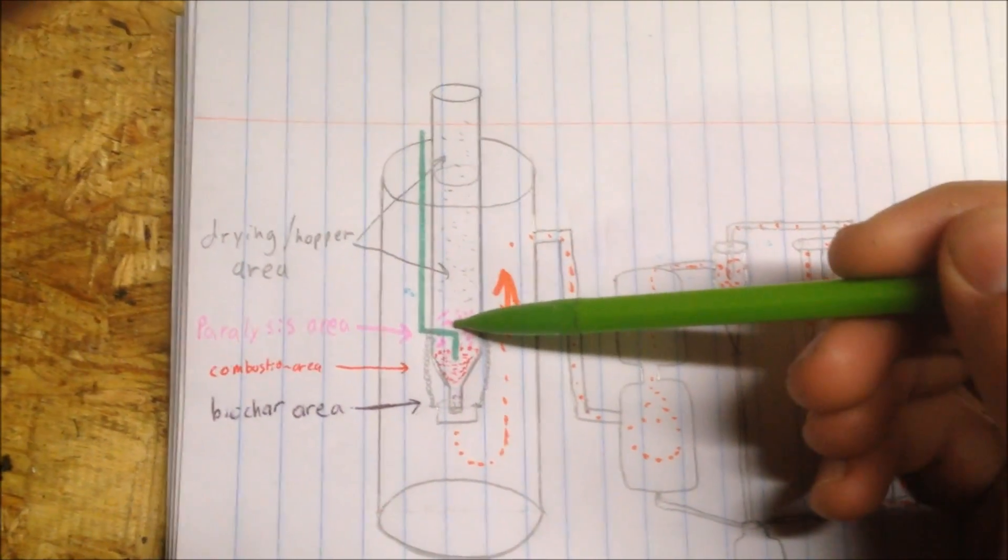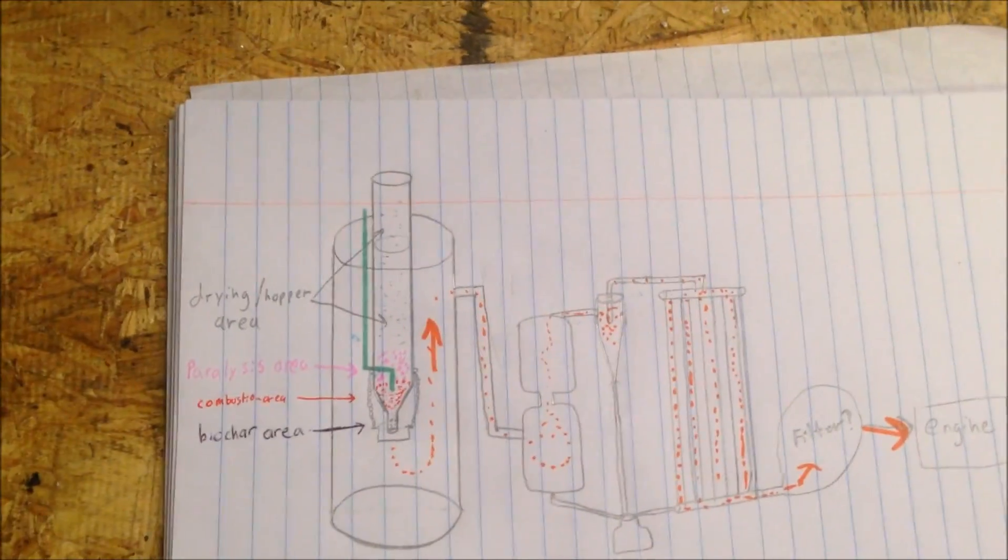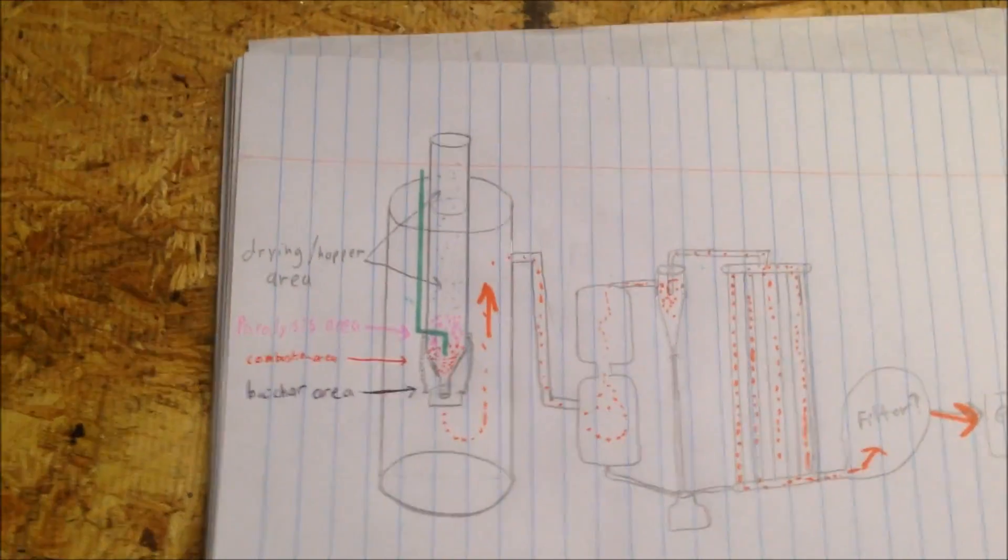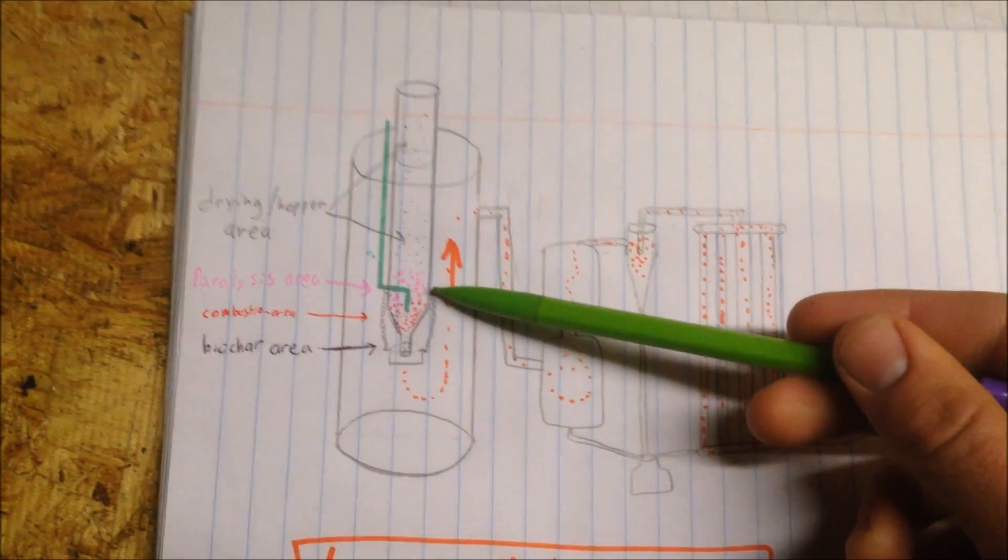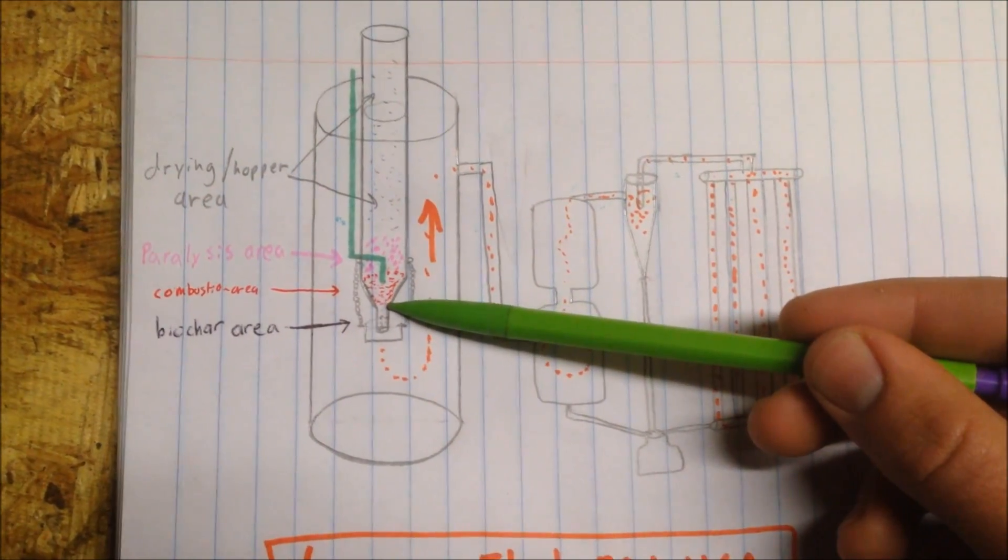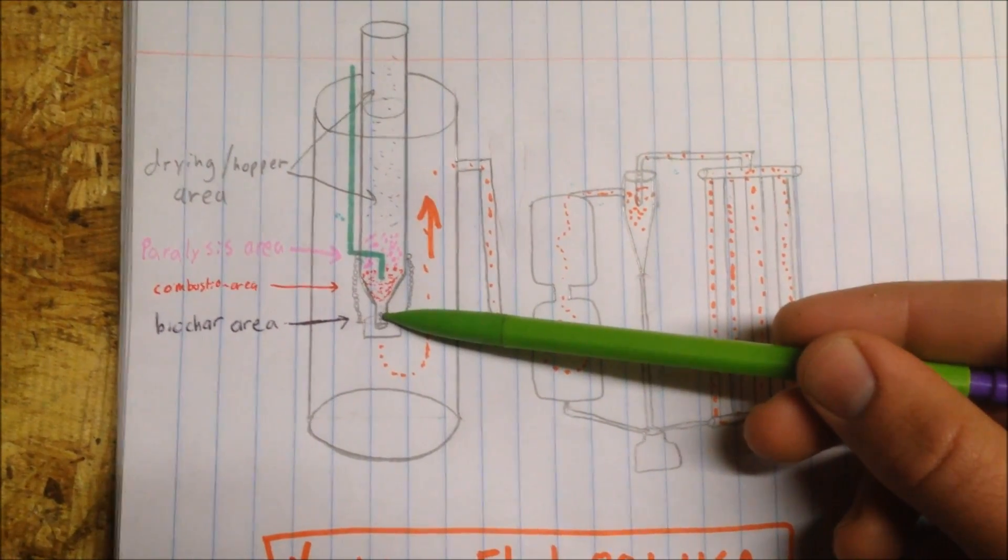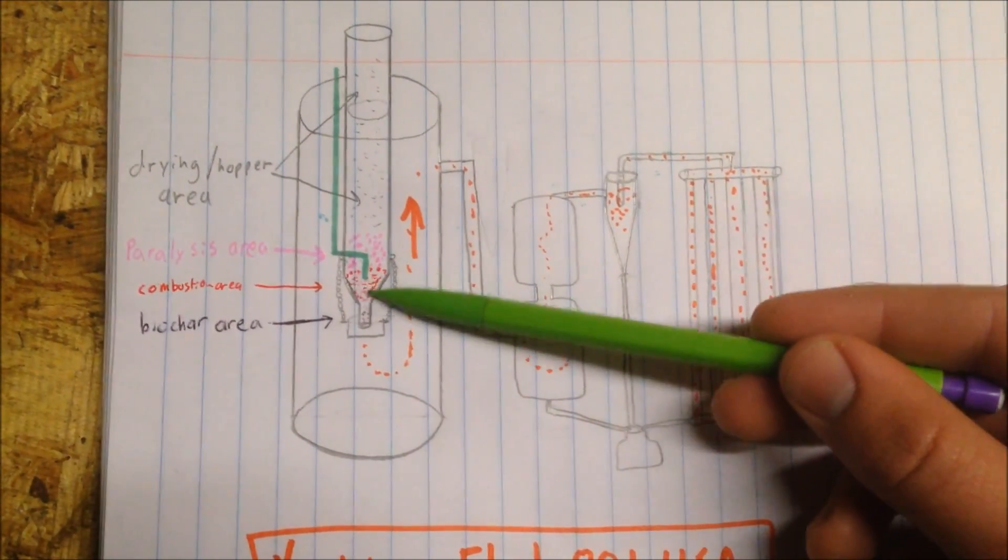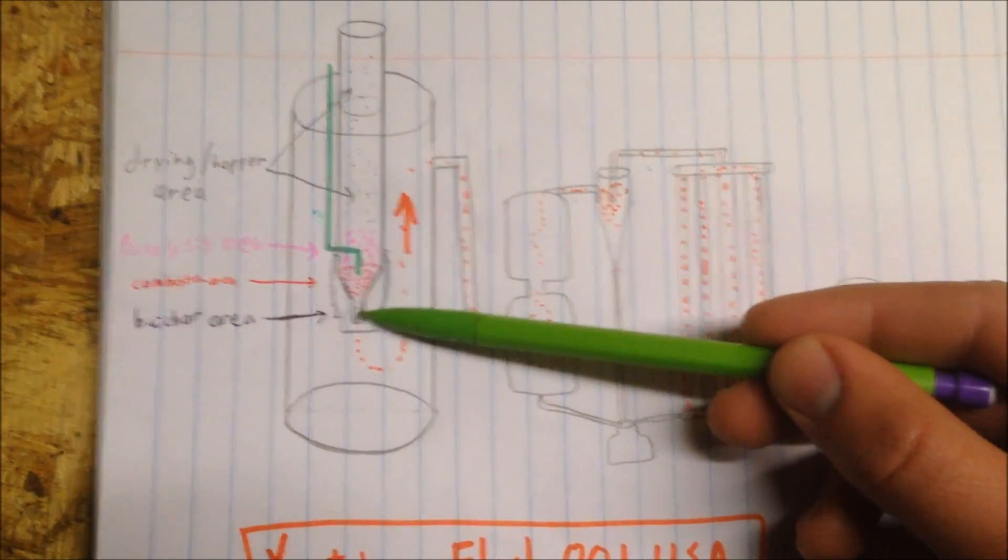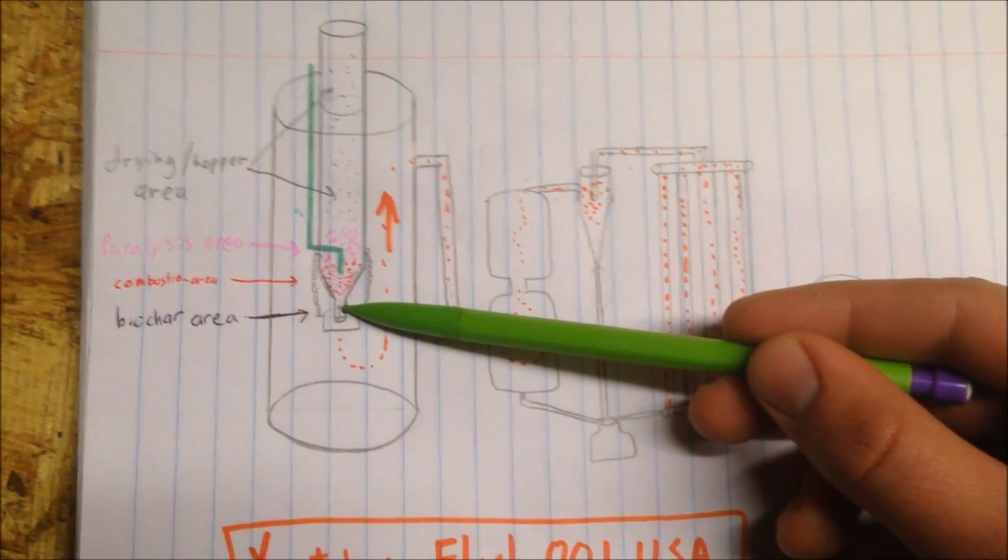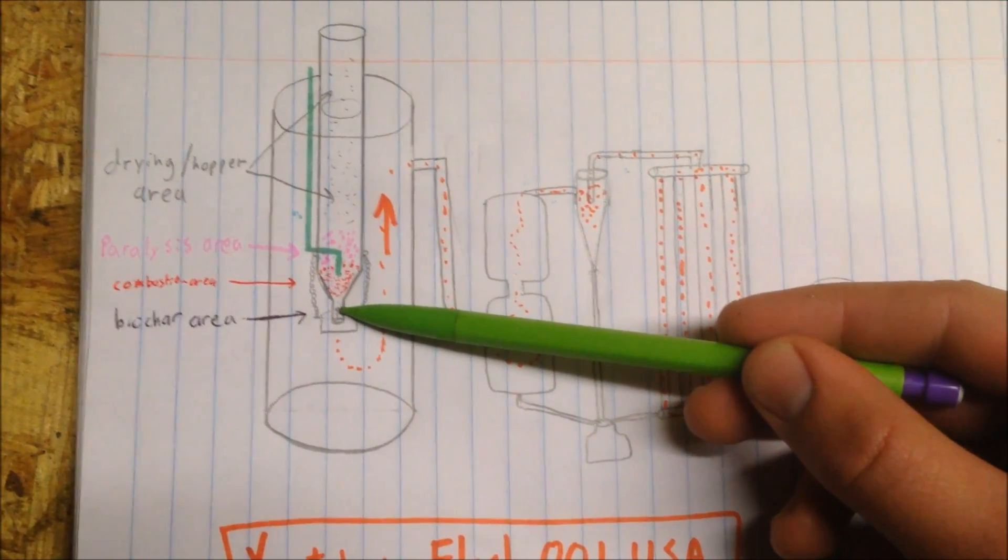And it essentially decomposes the wood into gases like methane, hydrogen, carbon monoxide, and a few other things. But those are the burnable gases, mostly carbon monoxide and hydrogen. Then it goes down through here into a reduction zone. This will be full of biochar because the oxygen will have all been burned up right here, so there won't be hardly any burning going on down here.